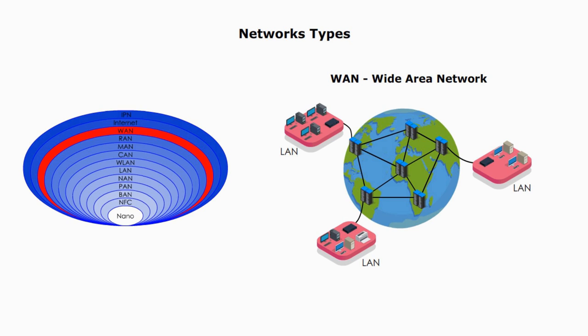In the simplest form, the wide area network is a collection of local area networks. WAN is essentially the network of networks.